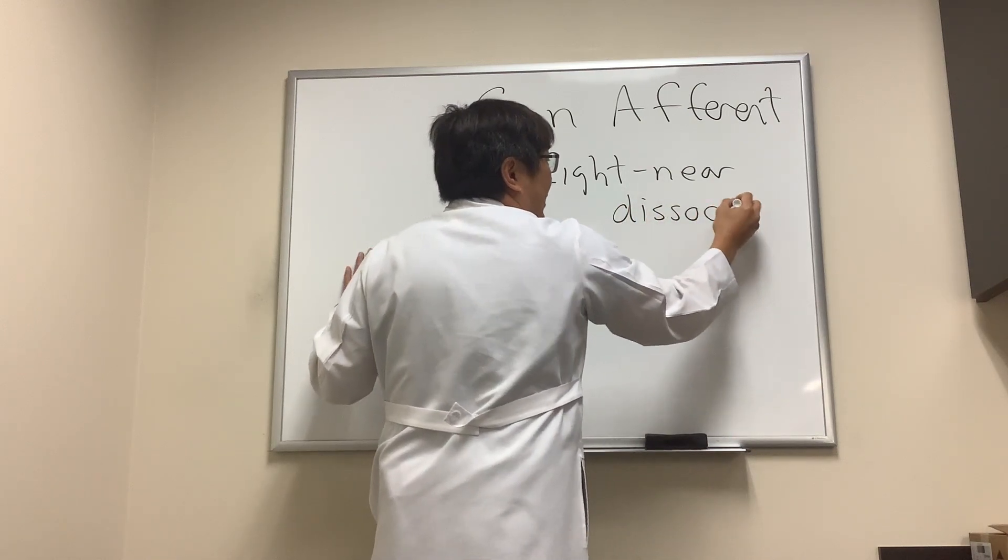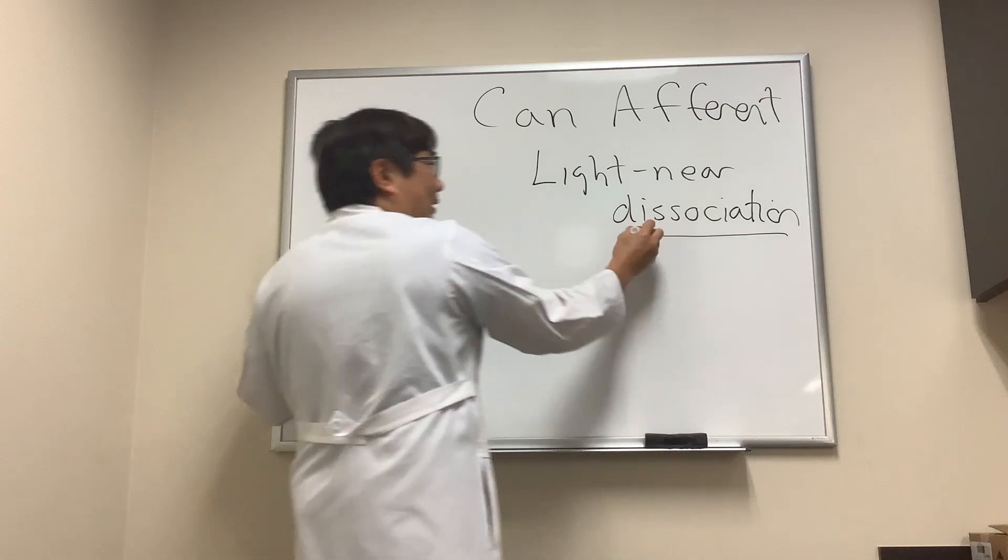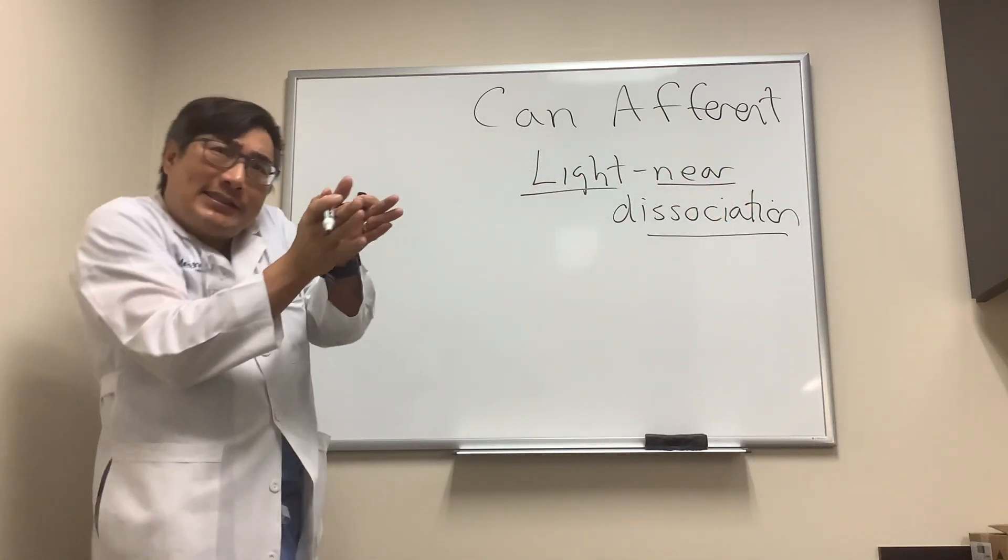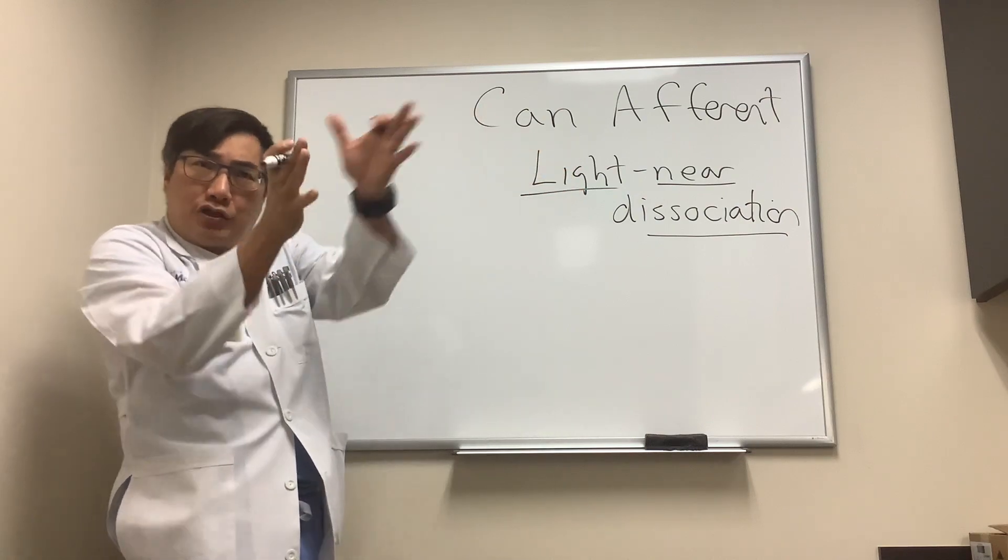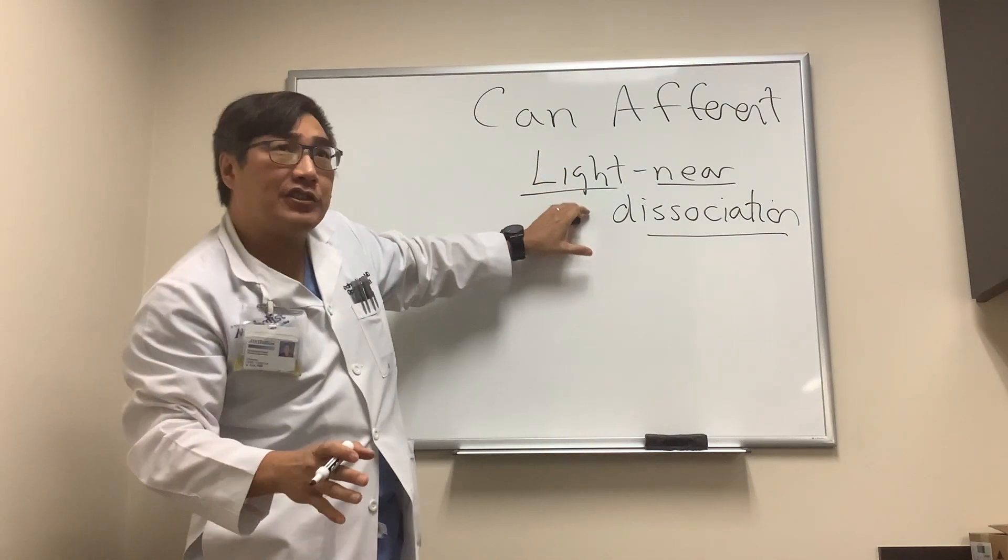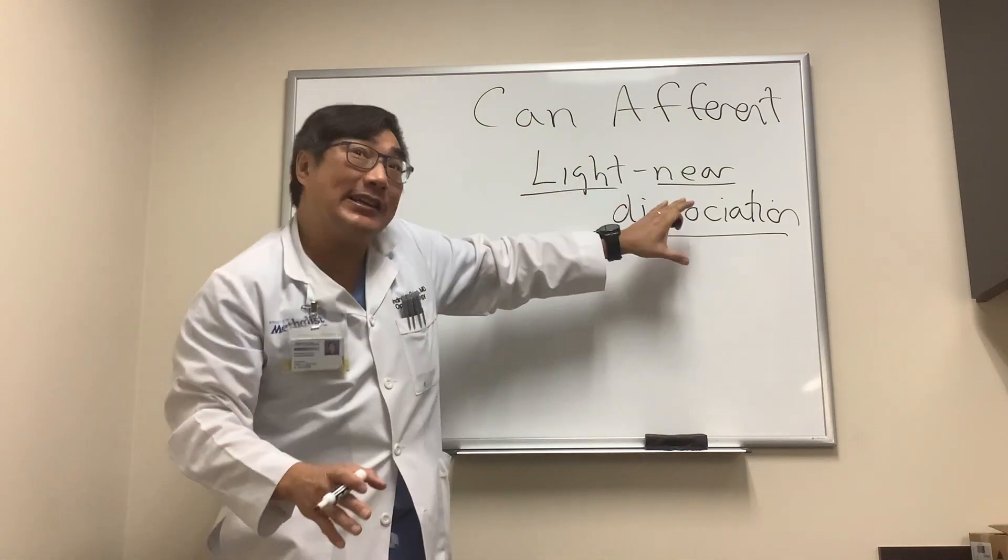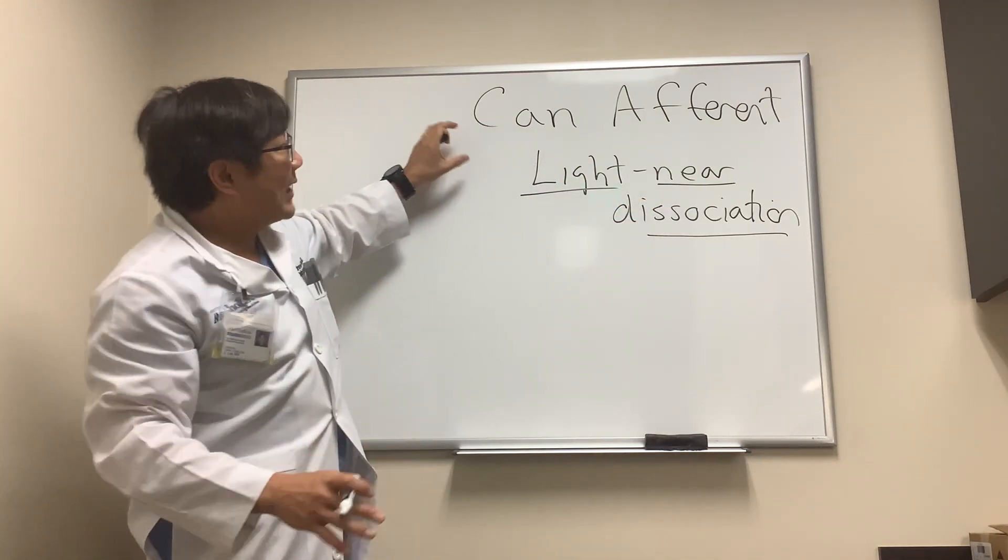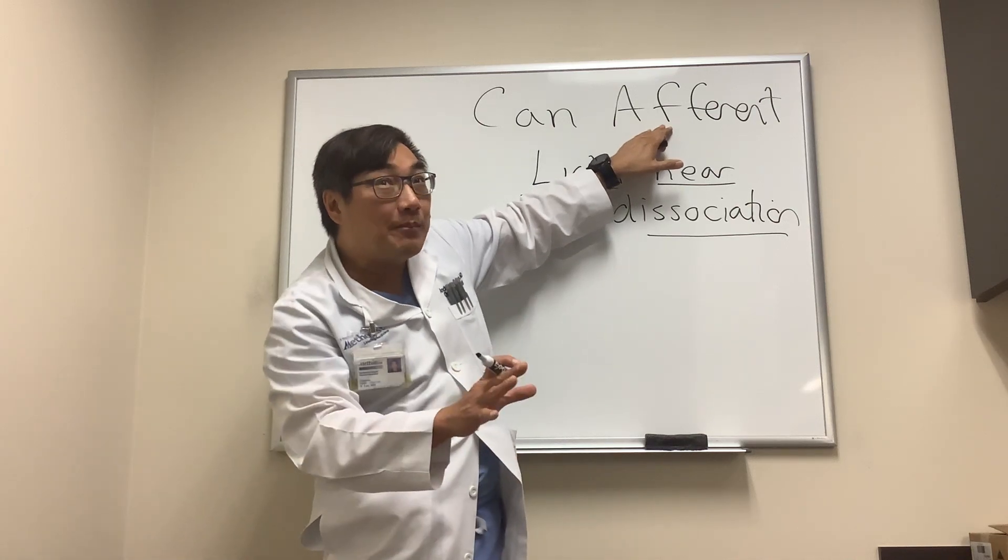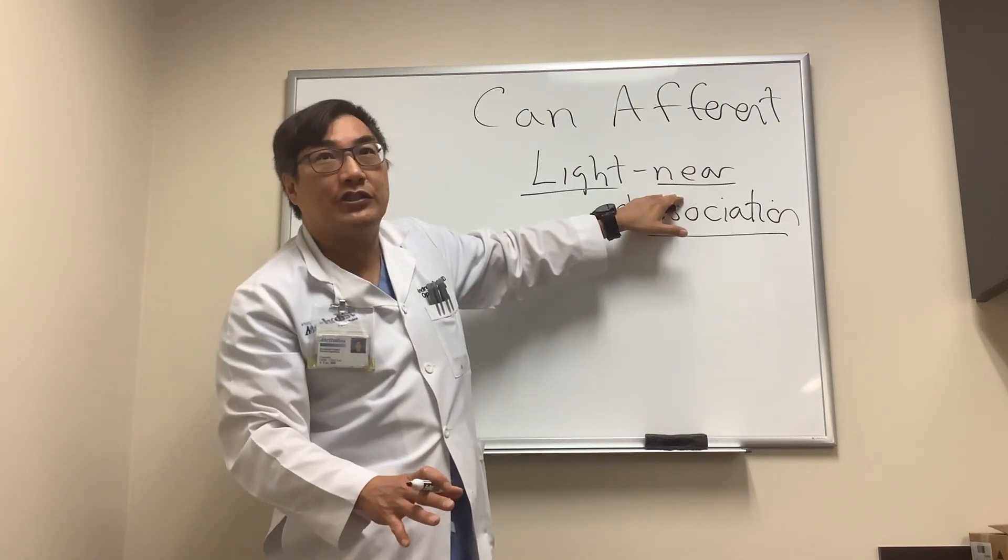And the reason is, dissociation means that they're not associated, and that's because the light and the near pathway separate out at two different locations. And so because of that separation, we can have dissociation between the light and the near pathway. And because the light pathway has both an afferent and an efferent component, it can definitely dissociate from the near pathway.